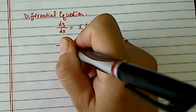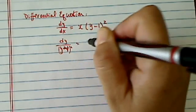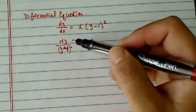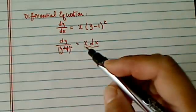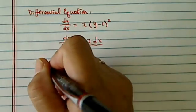We're going to separate the variable. First, y minus 1 squared, and then on this side I have x times dx. This side is pretty easy, and then this side is not difficult, but it's a little messy.